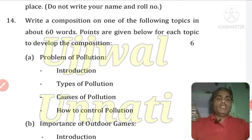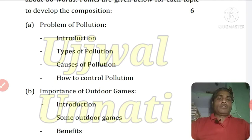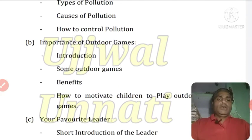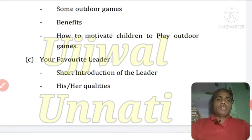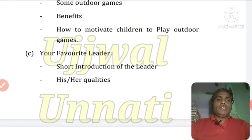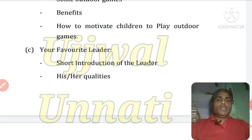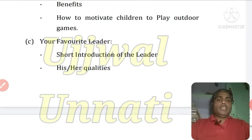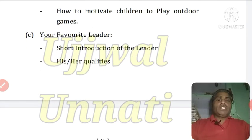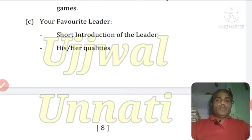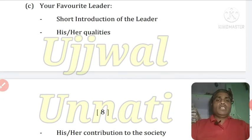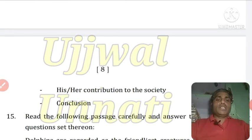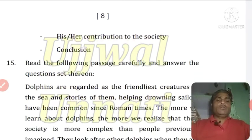Essay topics given: First, Problem of pollution — covering introduction, types of pollution, causes of pollution, and how to control pollution. Second, Importance of outdoor games — covering introduction, some outdoor games, benefits, and how to motivate children to play outdoor games. Third, My favorite leader — covering short introduction, his/her qualities, contribution to society, and conclusion.